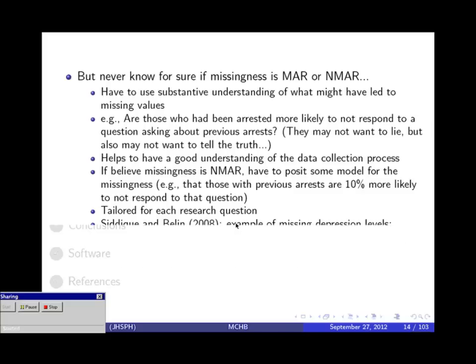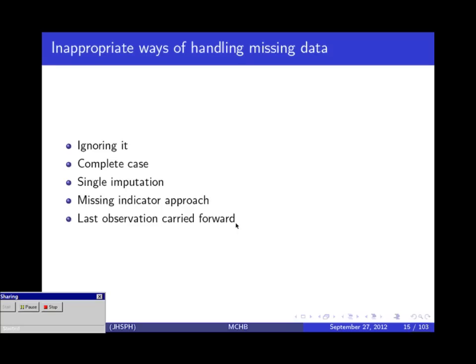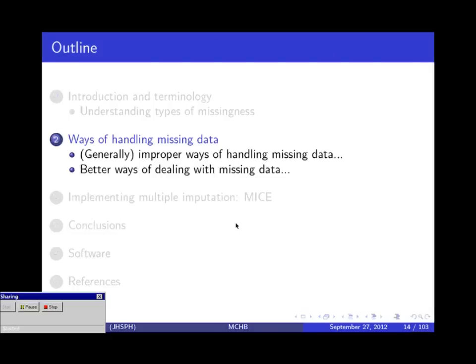We're going to proceed today assuming we're willing to assume missing at random — that our observed characteristics capture the differences between people with missing and observed data. I want to spend some time on how NOT to handle missing data, partly because some of these approaches are common, and I want you to understand what the problems are with these easy approaches. They are tempting because they're very easy to implement.